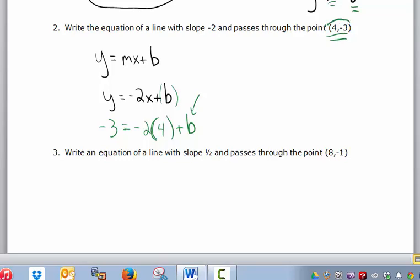So what I'm trying to say is, no matter what point they give you, as long as it's on the line, which in this case it is, that's what they're saying, then you're going to be able to find the same b value, no matter what point they give. In this case, (4, -3).